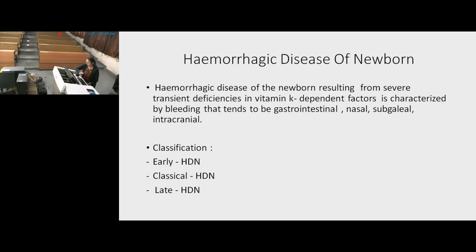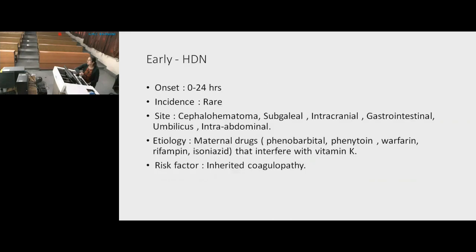Classification has three types. First is early HDN, which starts within 0–24 hours of birth; incidence is very rare. Sites include cephalhematoma, intracranial bleeding, GI, umbilicus, and intramuscular. Etiology is maternal drugs — if a mother has a seizure disorder, she may be on phenobarbitone, phenytoin, warfarin, or isoniazid, which interfere with vitamin K. Risk factor is inherited coagulopathy.